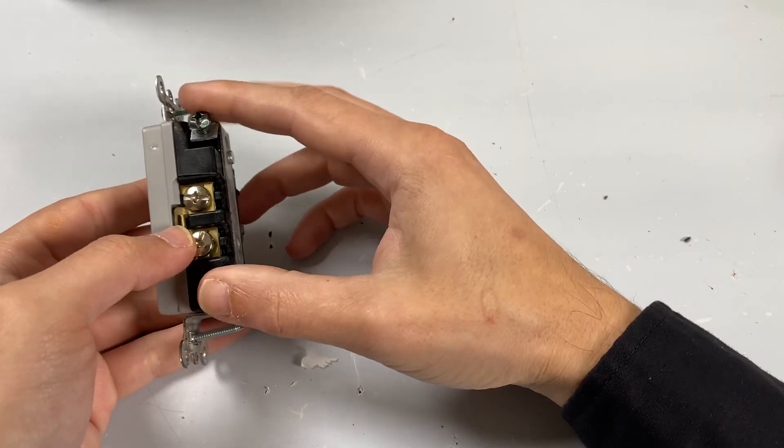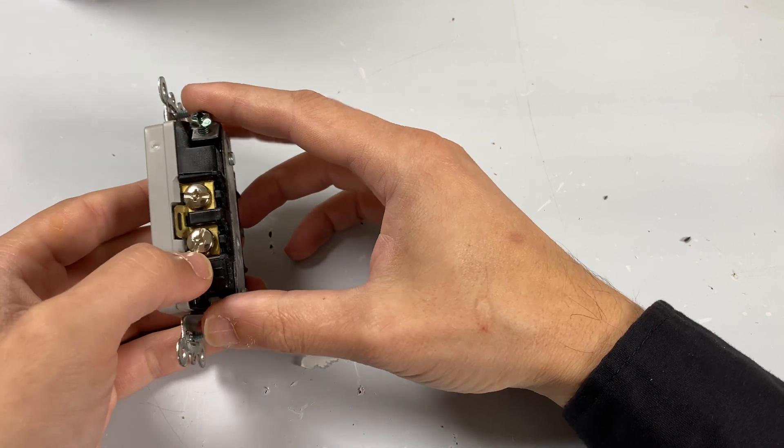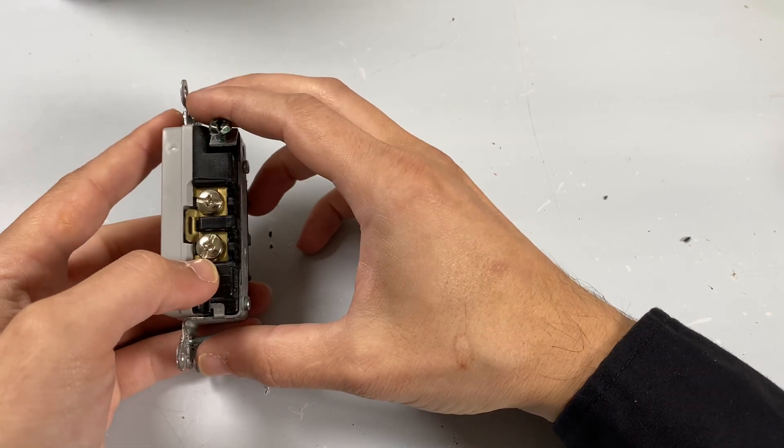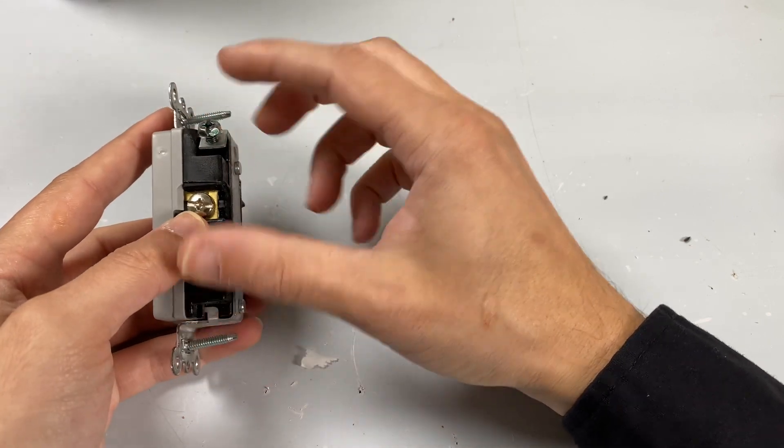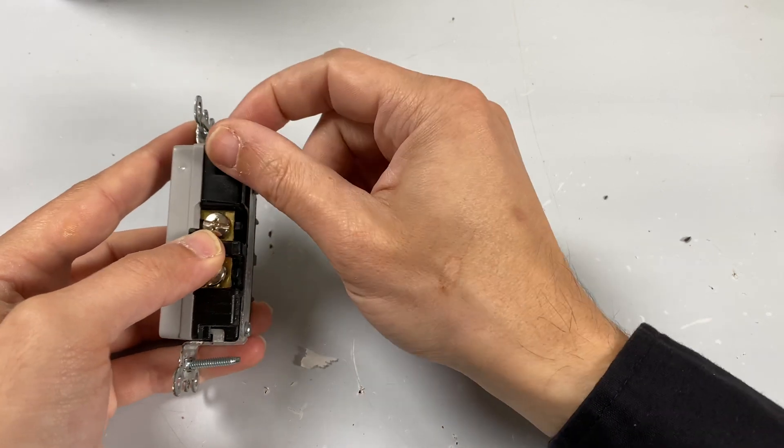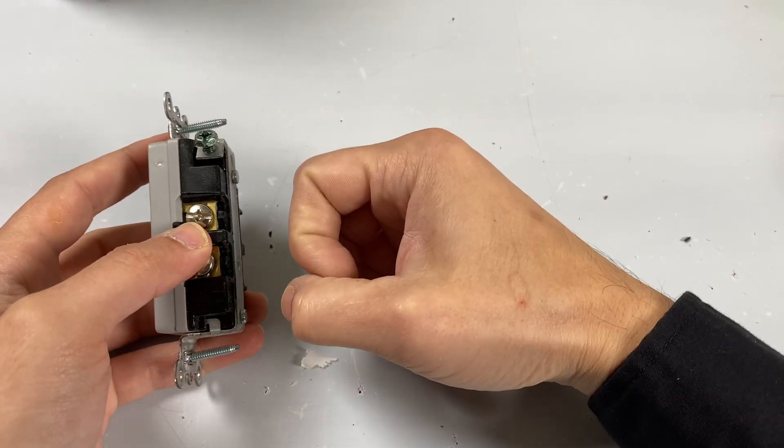In newer construction where you're dealing with Romex, where there's a black wire for your hot, a white wire for your neutral, and a bare wire for your ground, the bare wire would go around here and in addition go to the box.